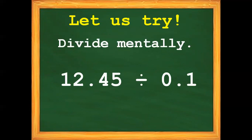Divide mentally: 12-and-45-hundredths divided by one-tenth. Your answer is? 124-and-5-tenths. Very good.